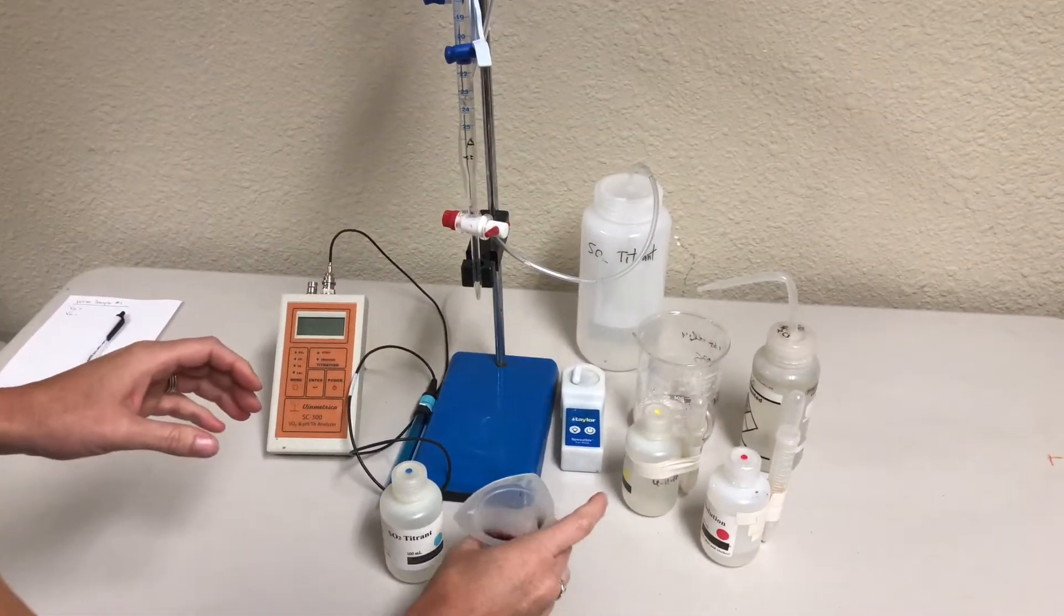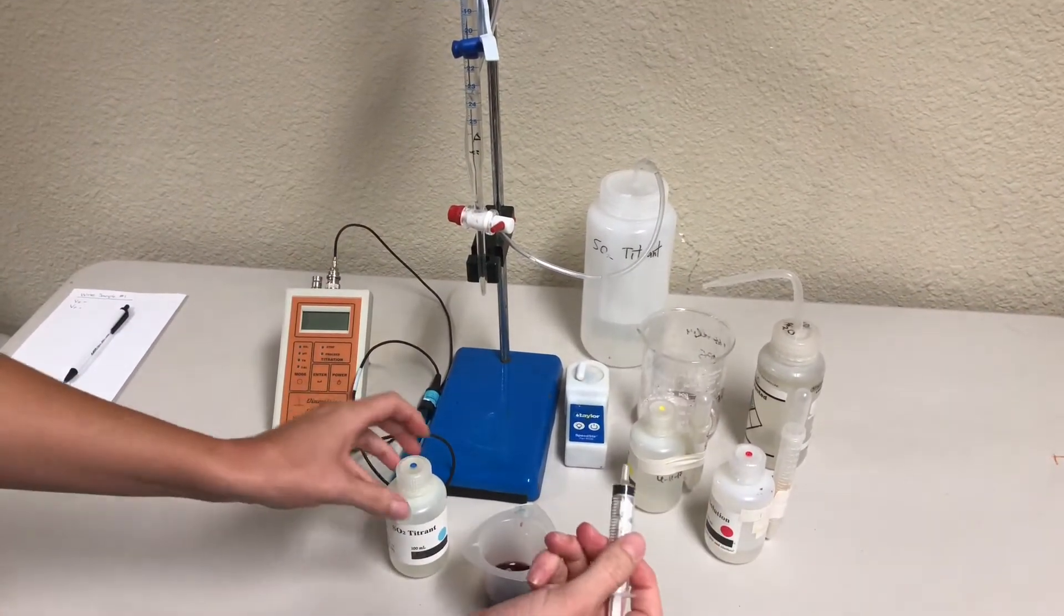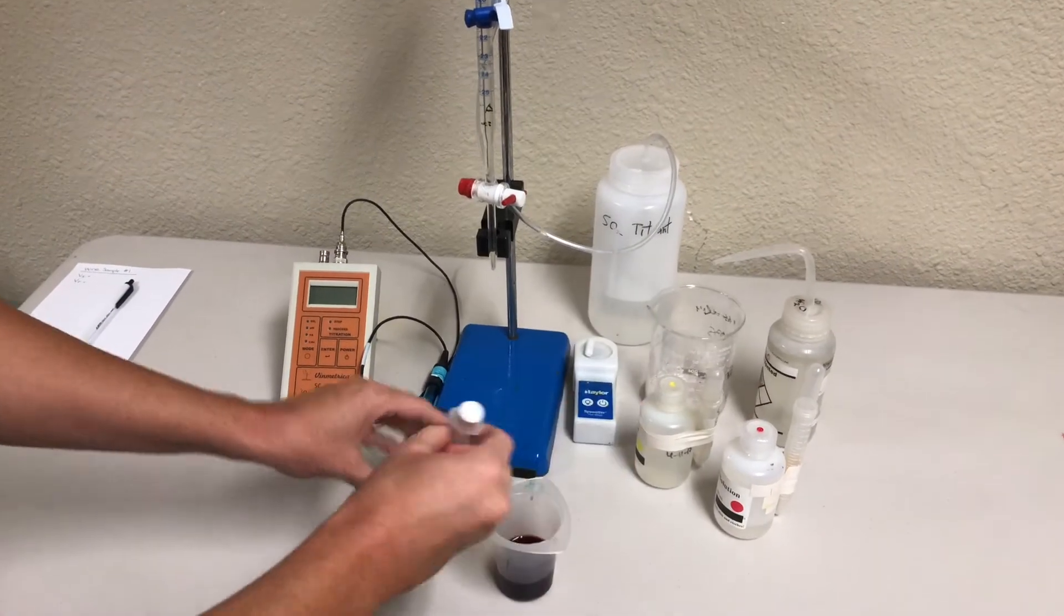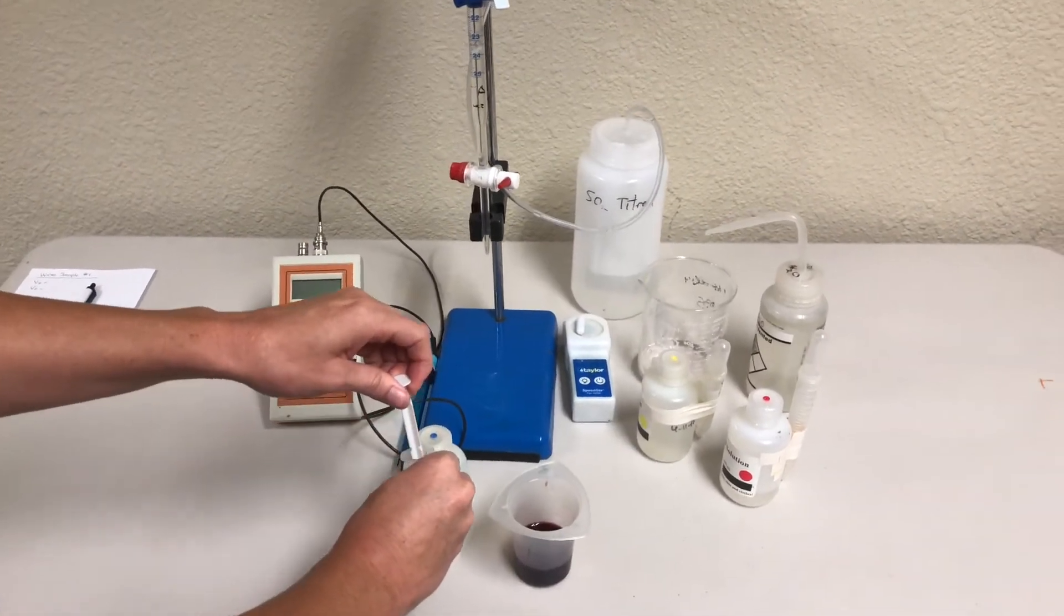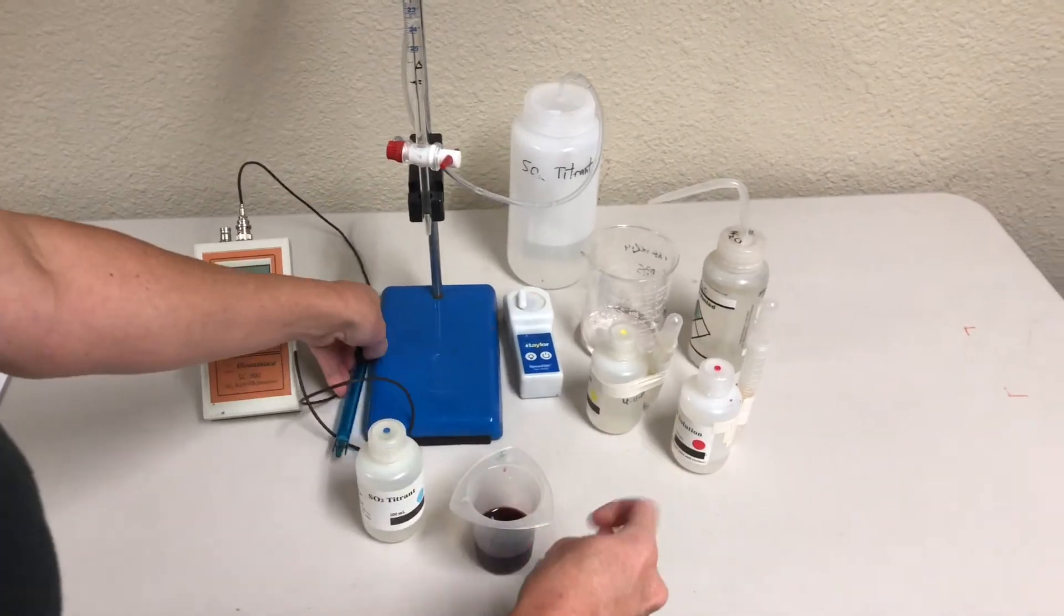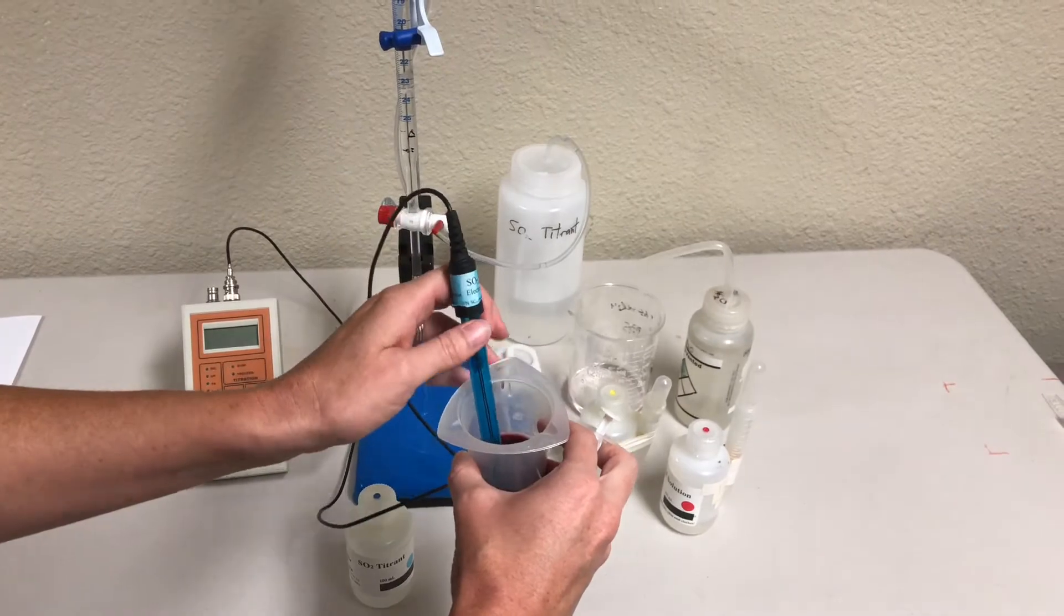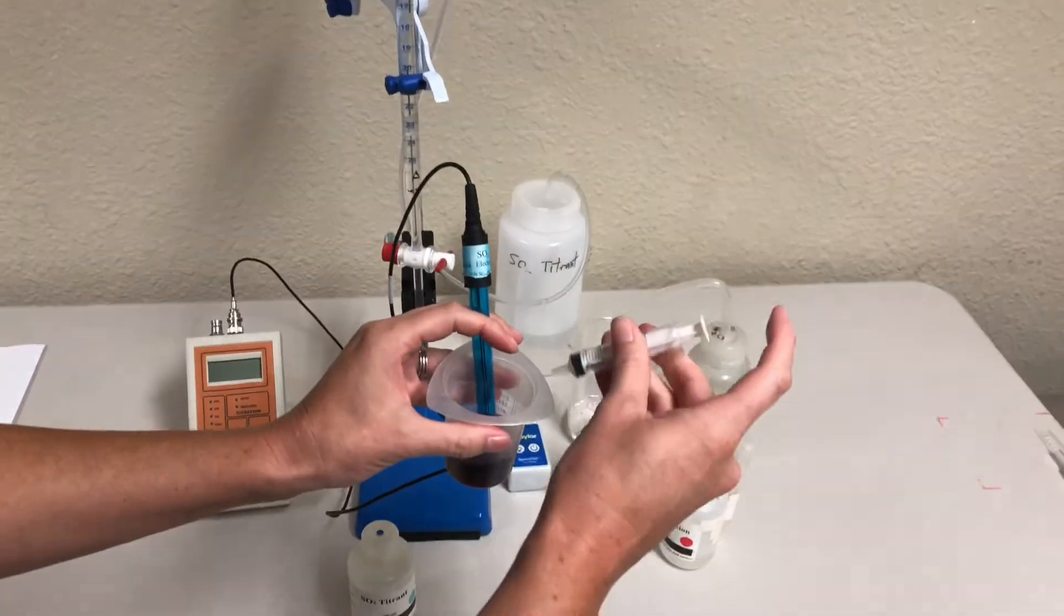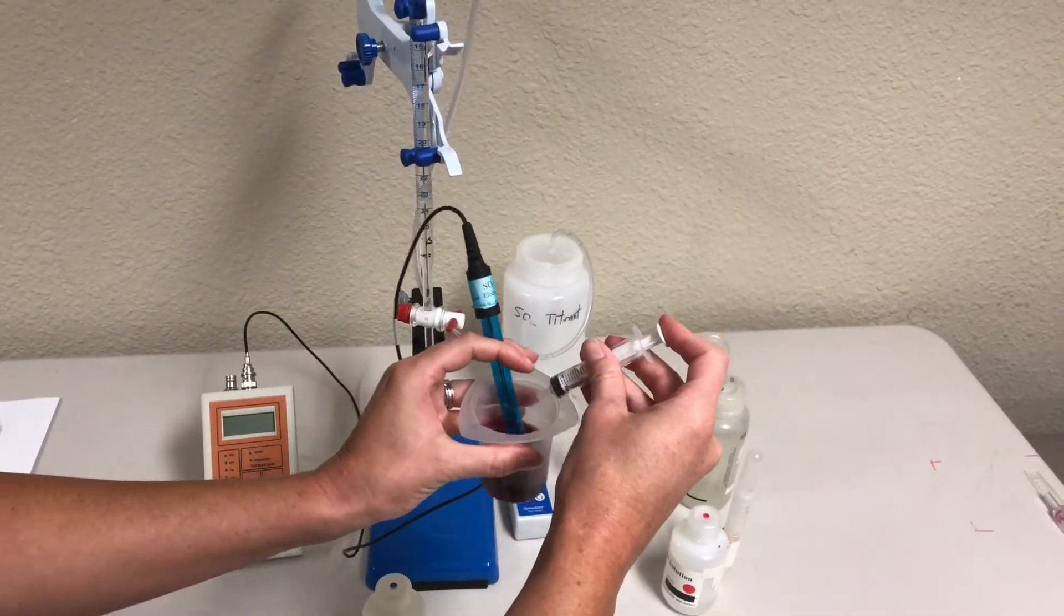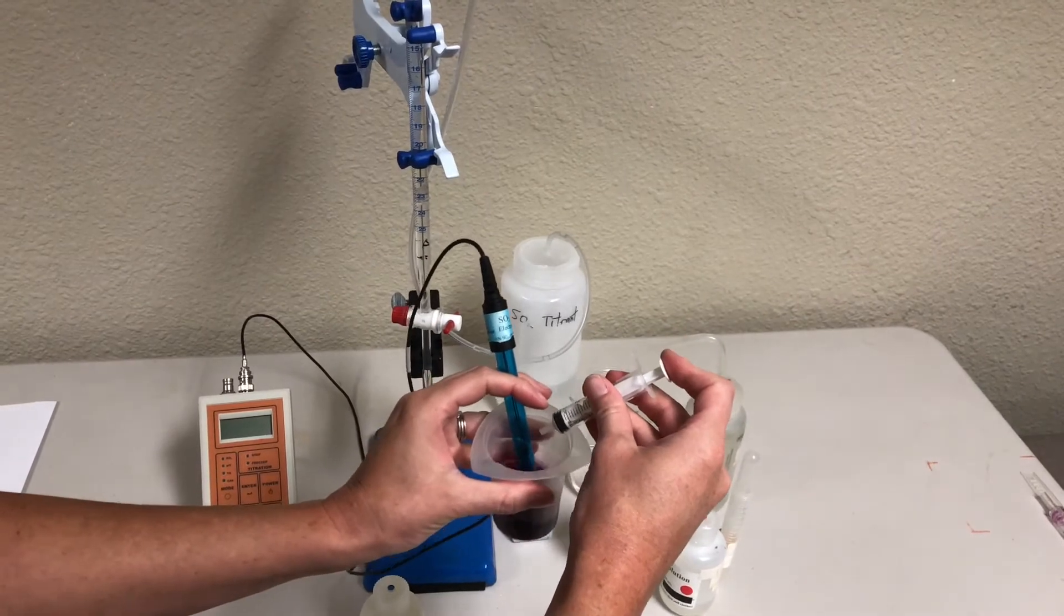Now, if you're using the syringe and your SO2 titrant, you'll use the syringe to suck up some SO2 titrant, and you'll run the test in your hand. You'll insert the SO2 electrode into your wine sample, and titrate using your syringe while constantly swirling the sample.